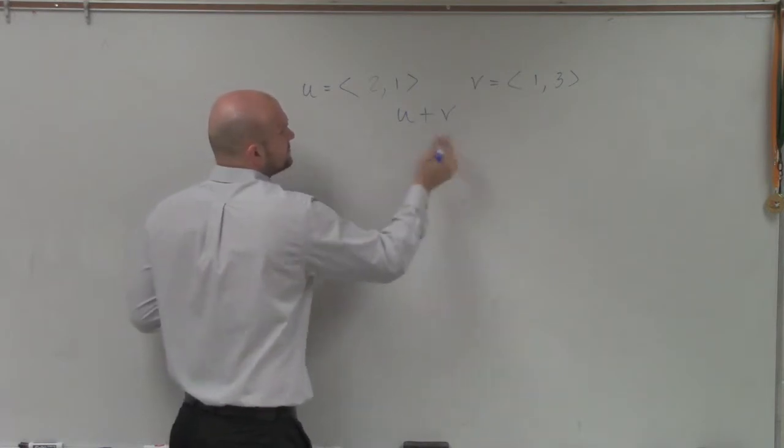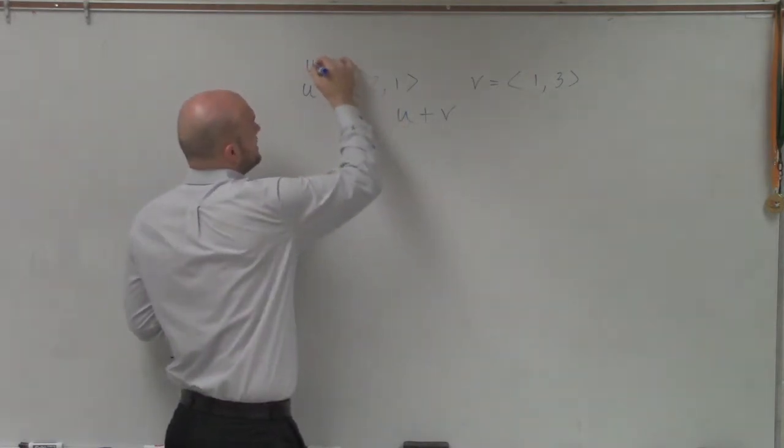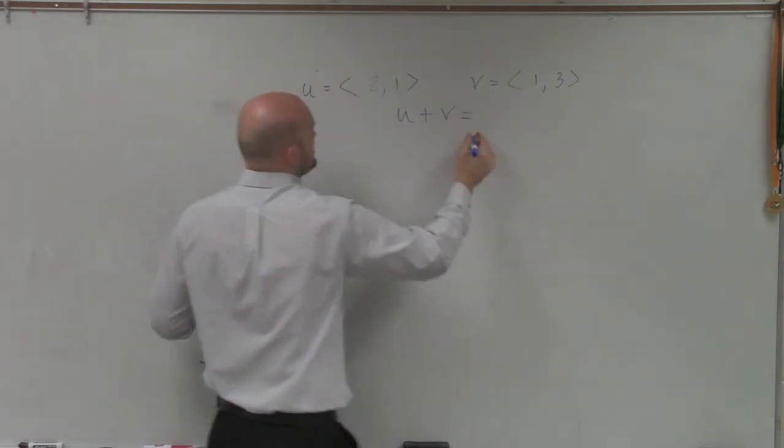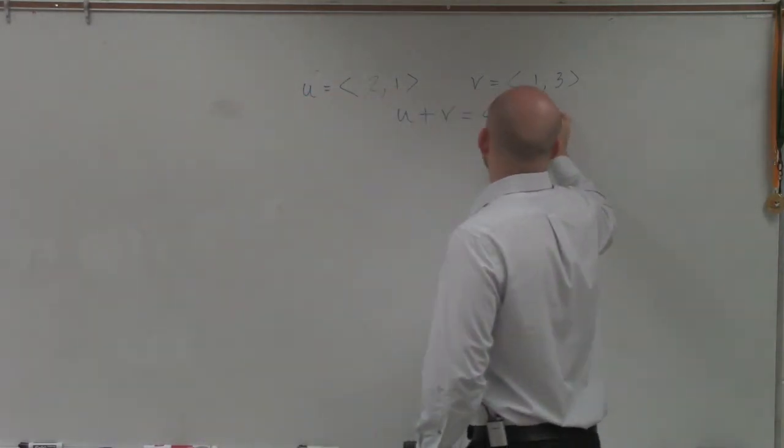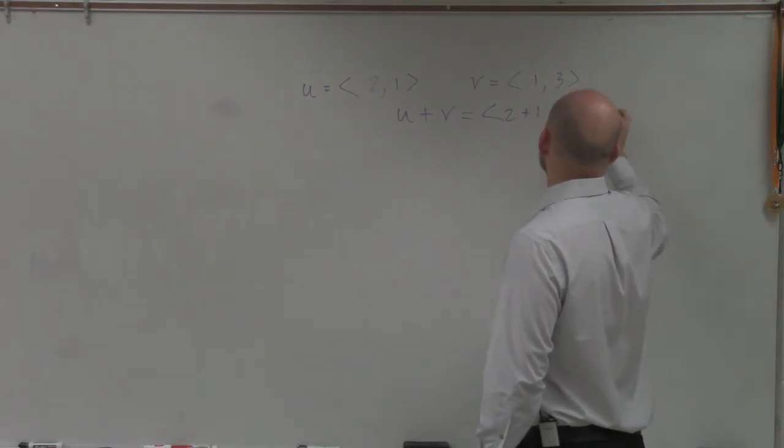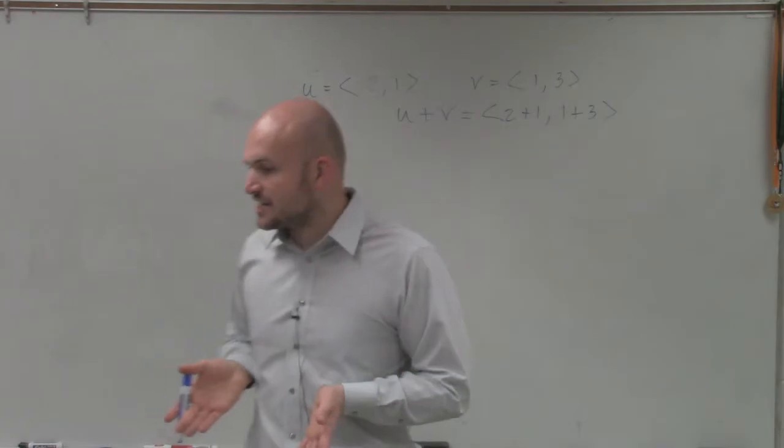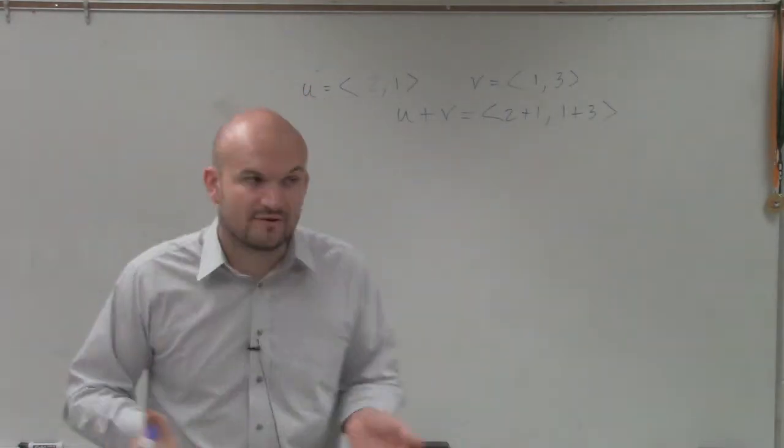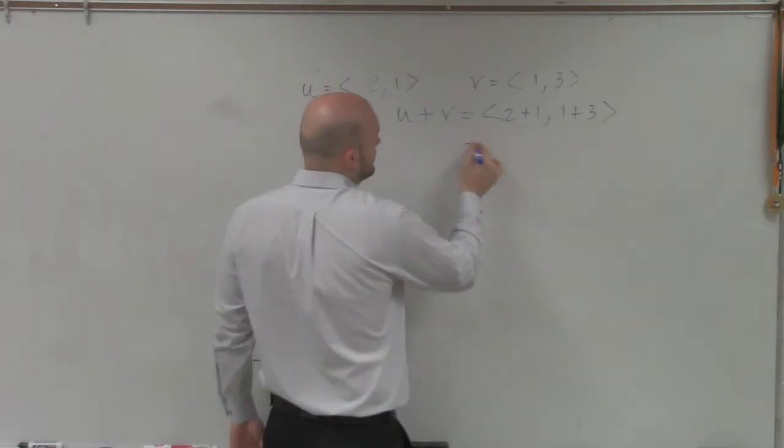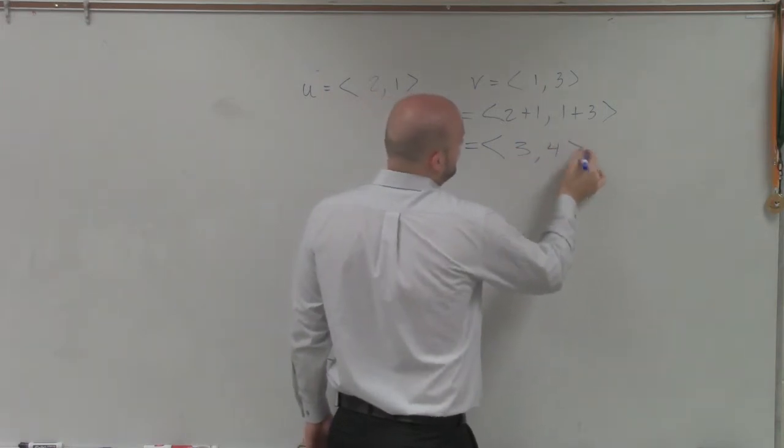So u plus v - I'll write this right in here - that's just going to equal 2 plus 1 comma 1 plus 3. So you just add the x-coordinates together and the y-coordinates together. Therefore, my resulting vector is (3,4).